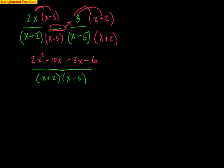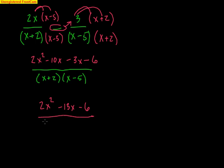So on top I get 2x squared, I get negative 13x, and I get minus 6. On the bottom I have these nice factors: (x plus 2) — remember, factors are any two items being multiplied — those are factors.